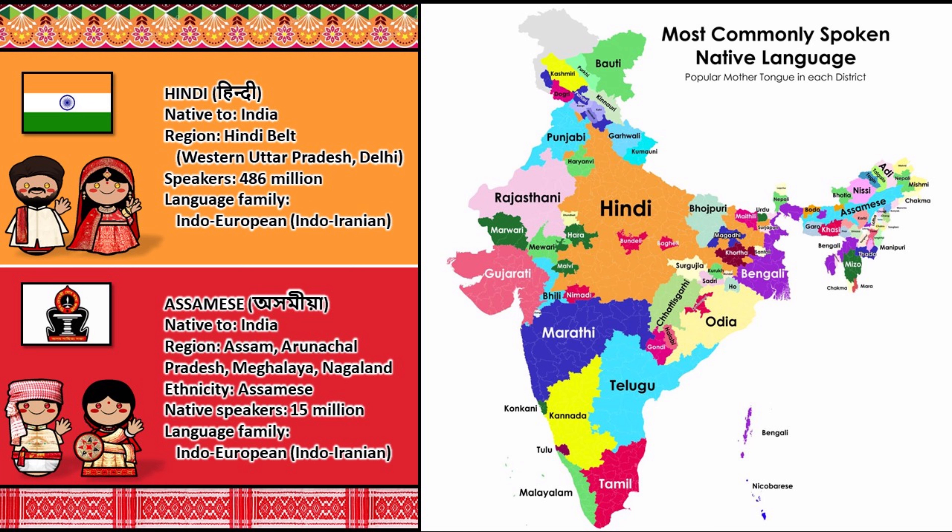Hindi is a Sanskritized form of Hindustani, which is primarily based on the Khariboli dialect of Delhi and surrounding areas. It is an official language in nine states and three union territories, and an additional official language in three other states. Hindi is also one of the 22 scheduled languages of India.